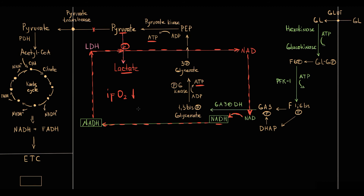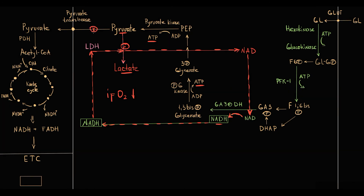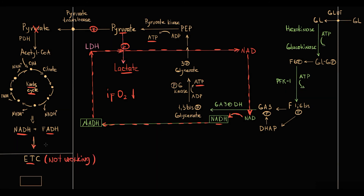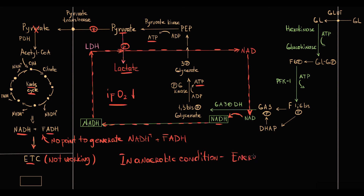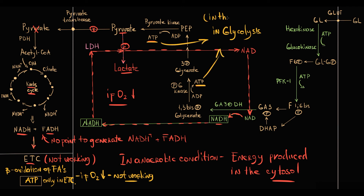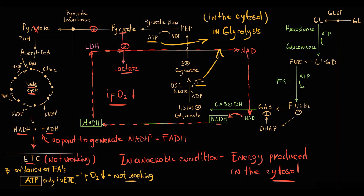In anaerobic condition, pyruvate stays in the cytosol in the form of lactate, so transport of pyruvate into the mitochondria is disrupted. This makes sense because the Krebs cycle's function is to produce NADH and FADH molecules to deliver electrons to the electron transport chain — but in anaerobic condition, the electron transport chain is not working. So the Krebs cycle and electron transport chain become totally useless, and the entire energy generation process occurs only in the cytosol. Only glycolysis can function in anaerobic condition, unlike beta-oxidation of fatty acids where energy can only be generated in the electron transport chain. Glycolysis generates ATP in the cytosol, making it the only possibility to produce energy anaerobically.